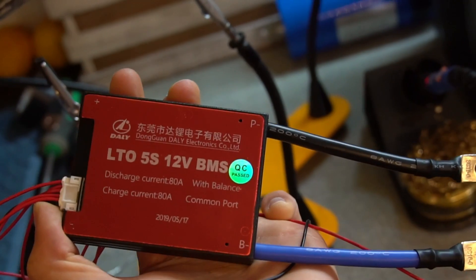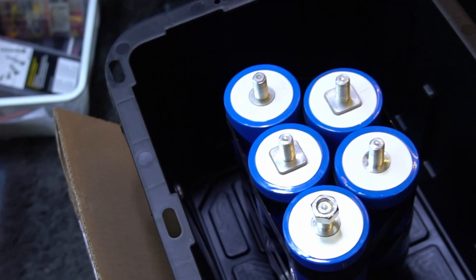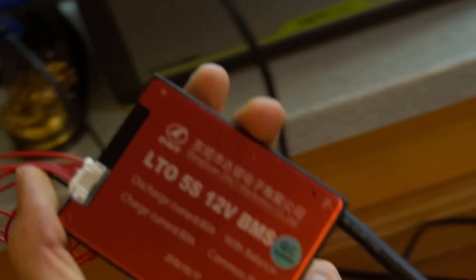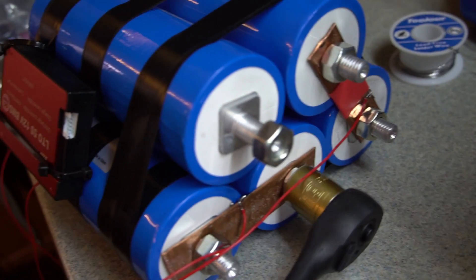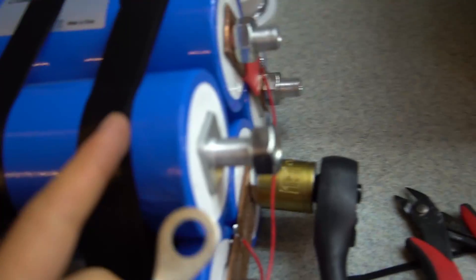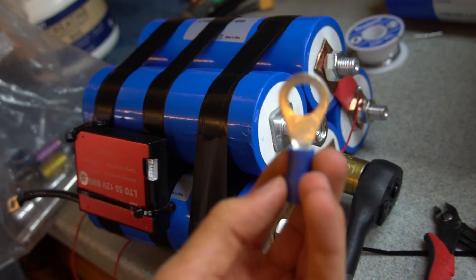Finally have the lithium titanate 5S BMS. So this will be able to take our cells and turn it into a safe 12 volt battery system. These terminals are massive. I have a size 19 to tighten these things down. And these are half inch studs. So it requires these huge terminal connectors.